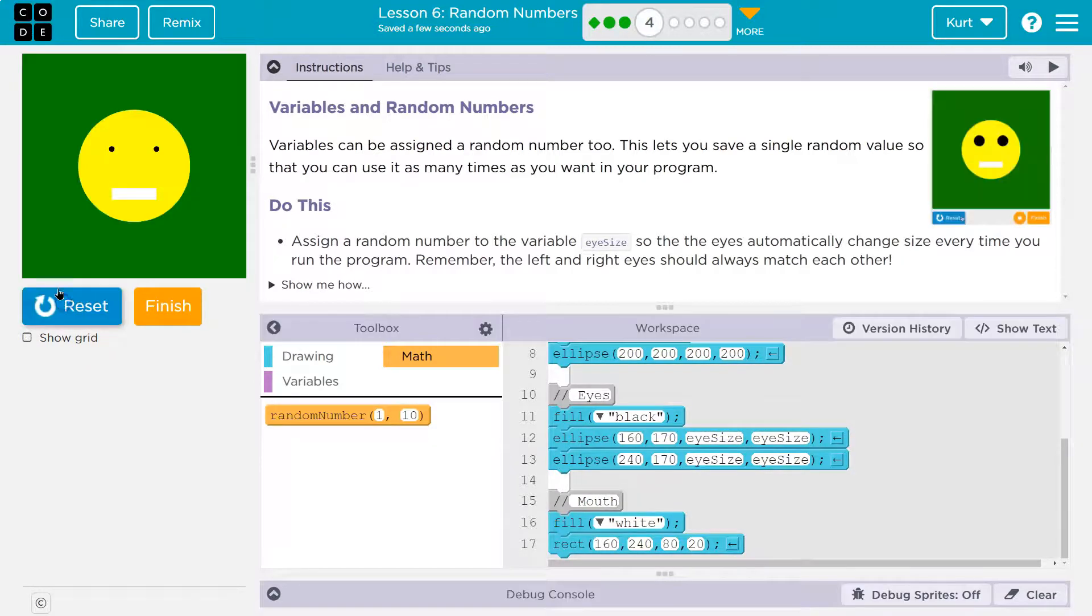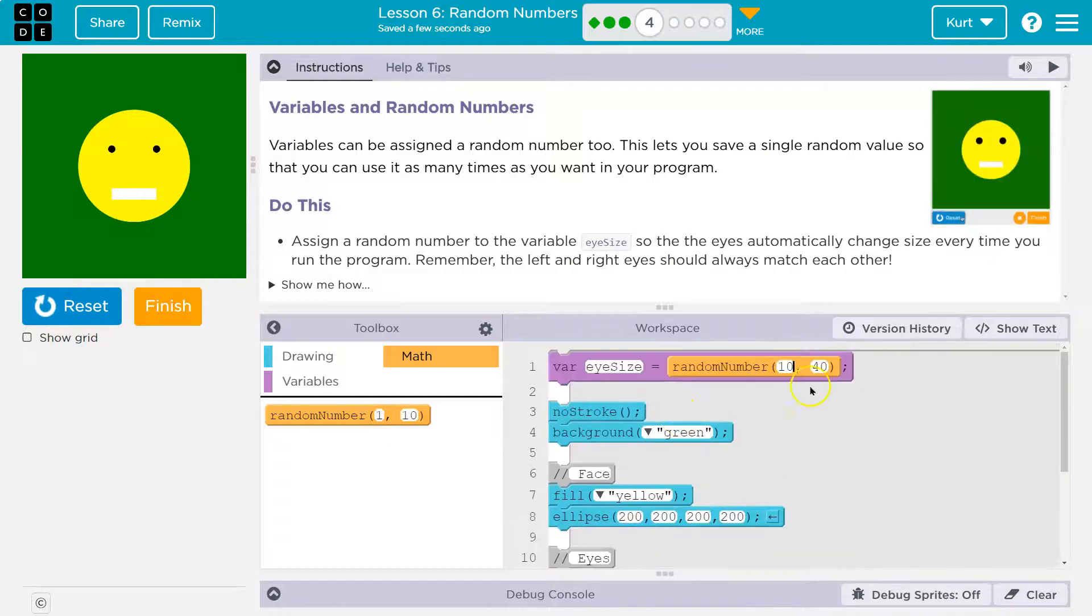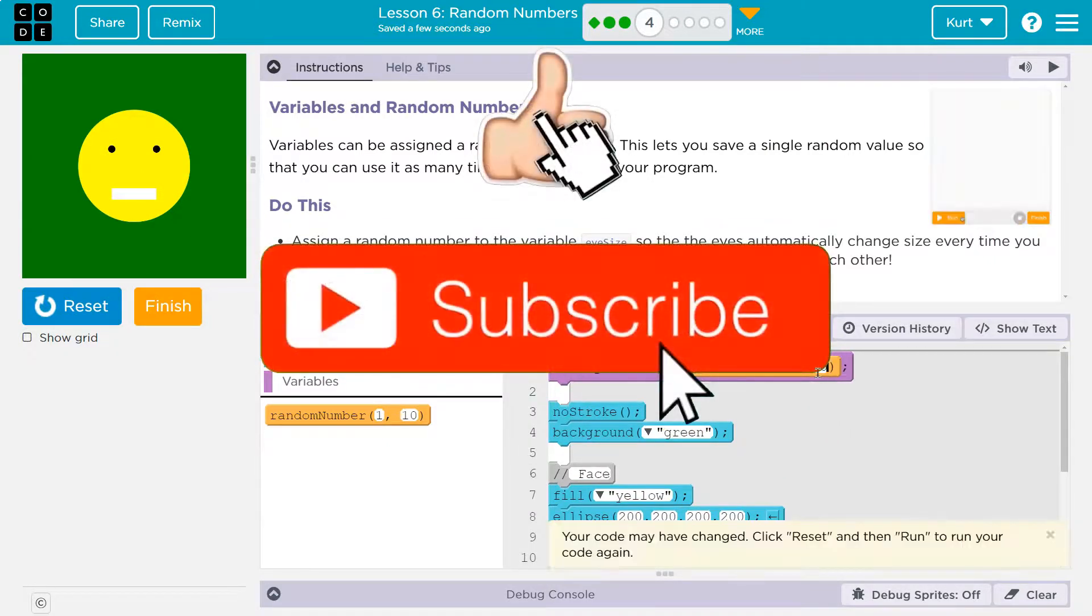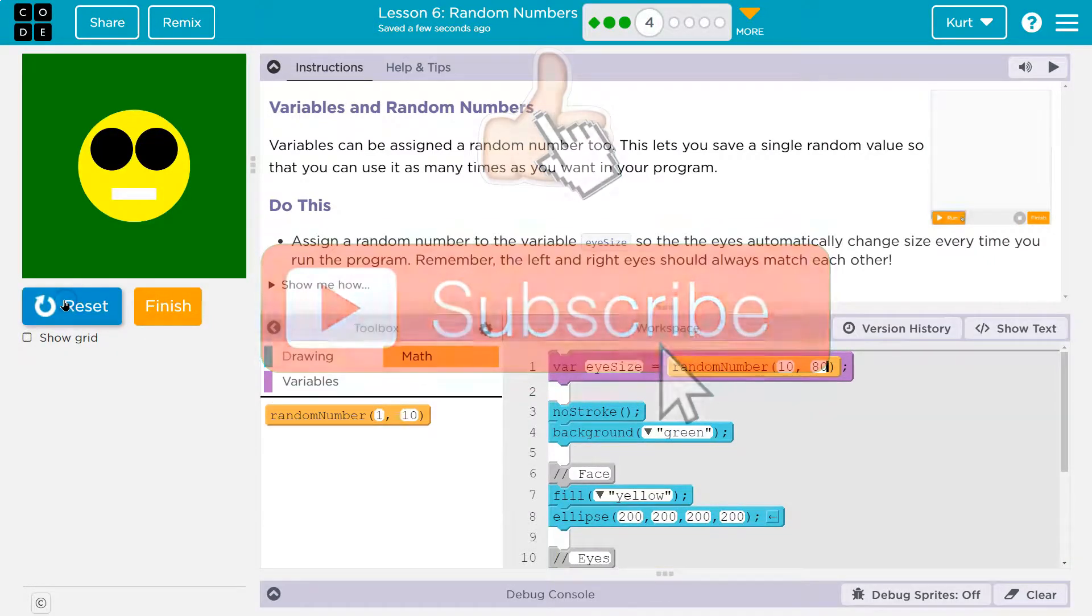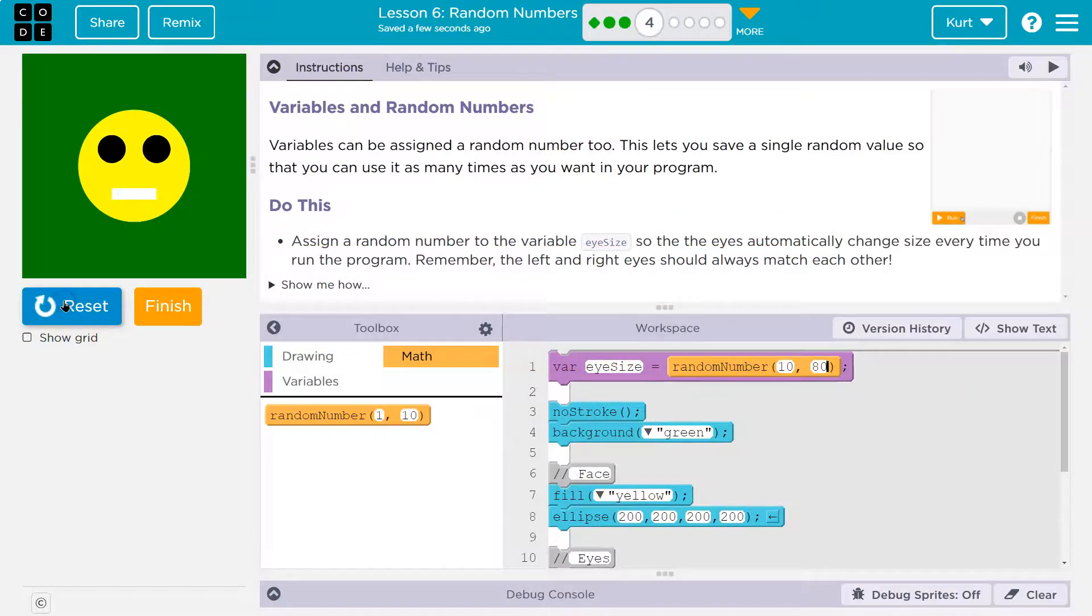Boom, boom, tiny, tiny, tiny. I want more of a variance. Let's see. I'm going to make mine 10 to 80. Boom, boom, boom, boom, boom, boom. It's kind of fun. All right, let's keep going.